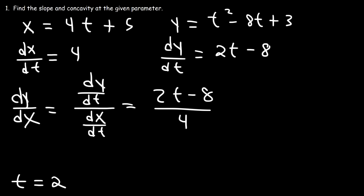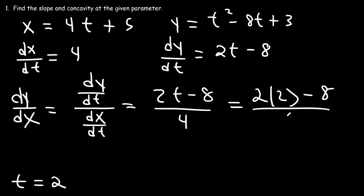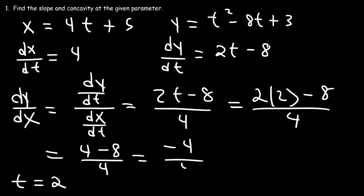At this point we can replace t with 2. So it's 2 times 2 minus 8 over 4. 2 times 2 is 4. 4 minus 8 is negative 4. And negative 4 divided by 4 is negative 1. So the slope is negative 1 when t is 2.